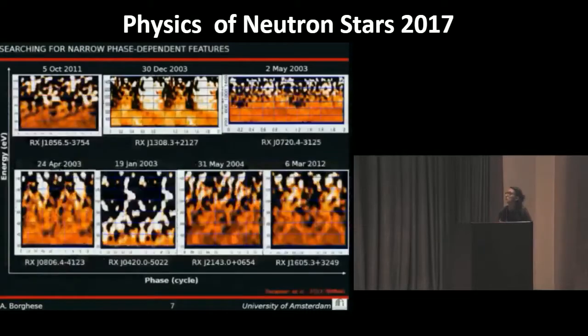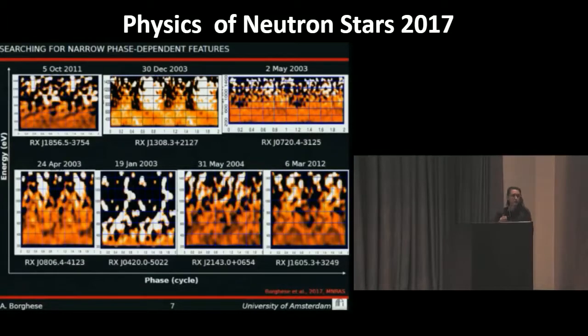We first analyzed the longest XMM-Newton observation available for each of the X-DINs, focusing on the EPIC-PN data. For each of them, we built the energy versus phase image, binning the source counts in energy and rotational phase bins, then normalizing by the phase average spectra and the pulse profile.